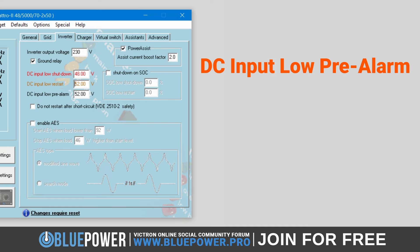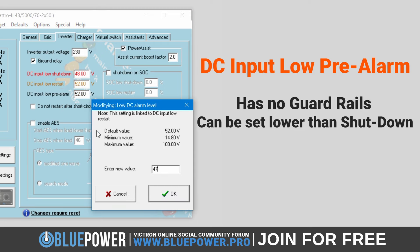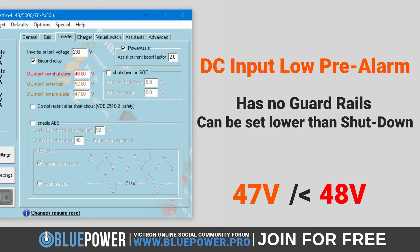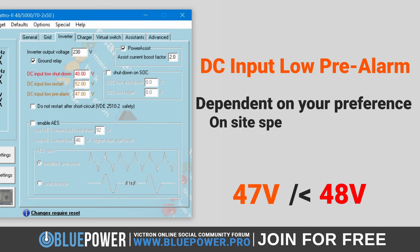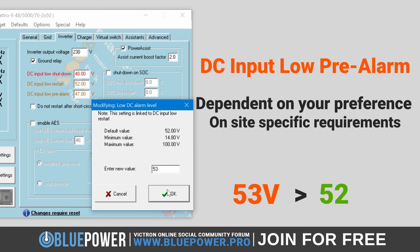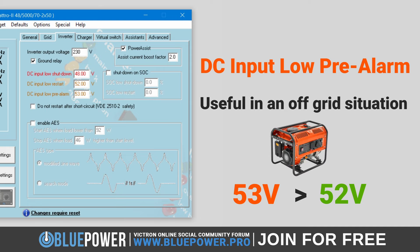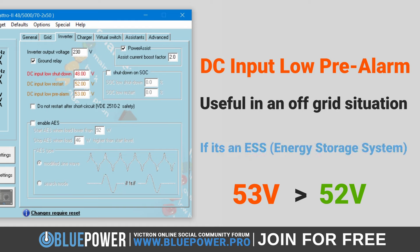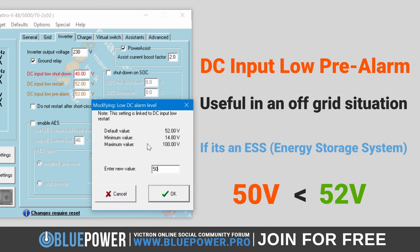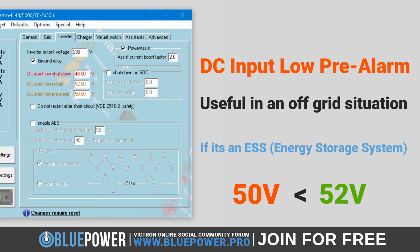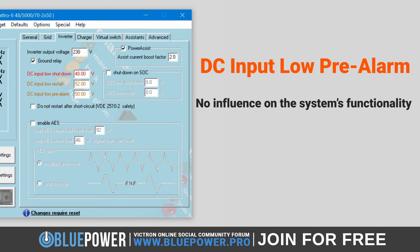When you adjust either the DC Input Low Restart or the DC Input Low Shutdown settings, the pre-alarm level automatically adjusts to the same voltage offset as the restart level. However, unlike the low shutdown voltage, the alarm has no guardrails and can even be set lower than the shutdown voltage, such as 47V with a 48V shutdown value — although this makes no sense as the battery would already be shut down before the alarm triggers. As the pre-alarm setting is dependent on your preference and on-site specific requirements, you may wish for it to be activated earlier than the restart voltage, such as 53V, which is useful in an off-grid situation to allow time to start a backup generator.